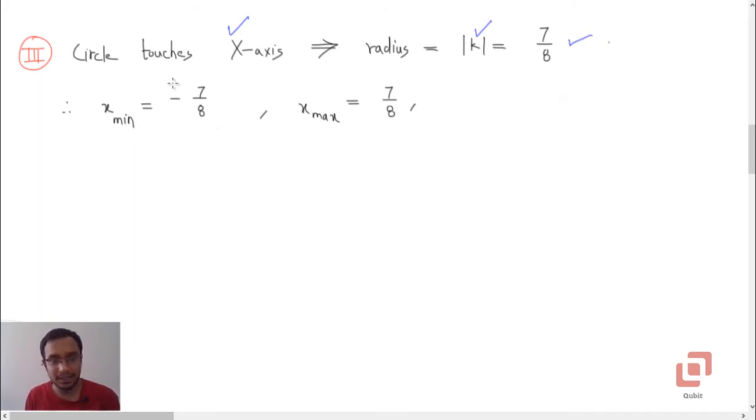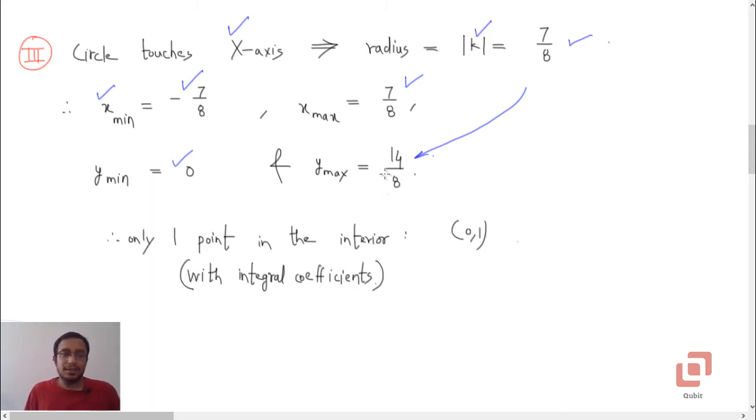Therefore we can now say that because the circle's center lies on y-axis, the minimum value of x which any point can have on the circle is negative 7 by 8 and the maximum value of the x-coordinate which any point on the circle can have is 7 by 8. And y-min is 0 because the circle is going to touch the x-axis at the origin and what is y-max, 2 times the radius. See now we know that there is only going to be one point in the entire interior of the circle and that point is going to be 0, 1. Because there is only one integer between negative 7 by 8 and positive 7 by 8 which is 0.